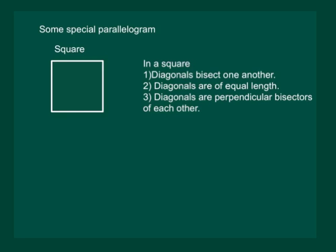For a square, the diagonals bisect each other because a square is also a parallelogram. The diagonals are of equal length since a square is a special rectangle. Also, the diagonals are perpendicular bisectors of each other.